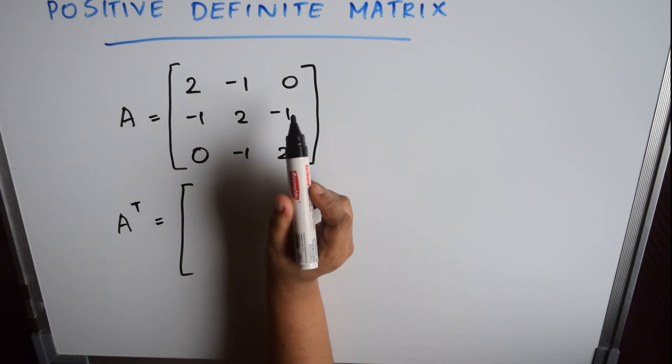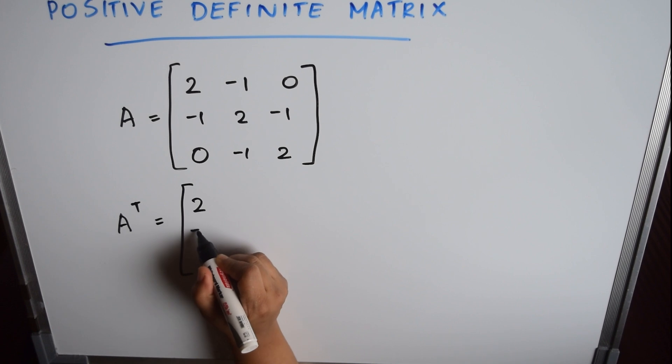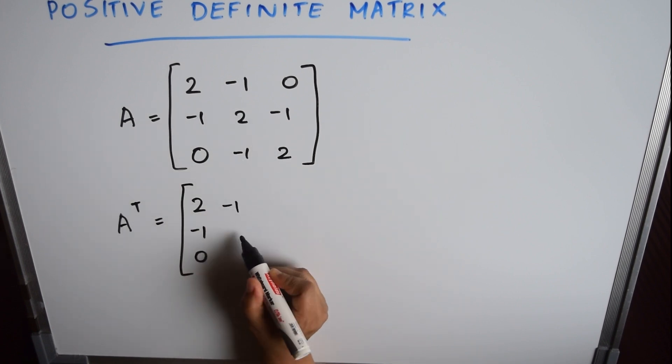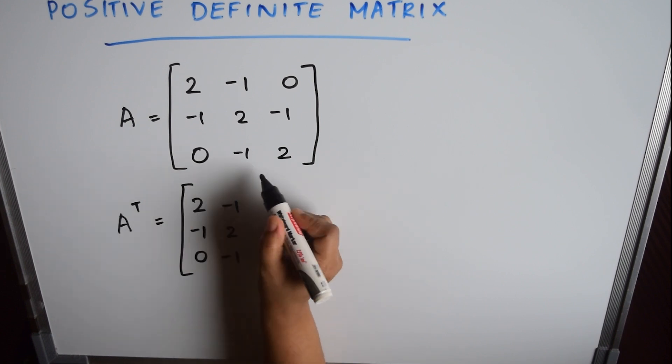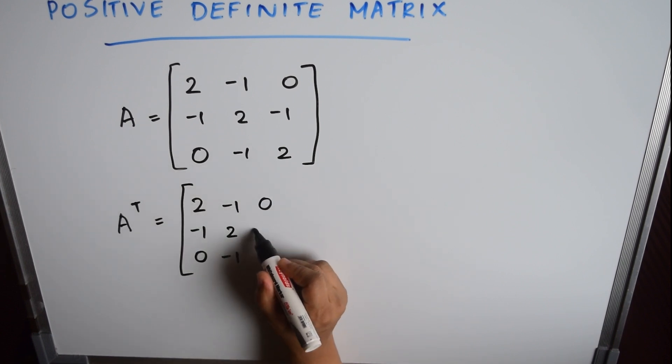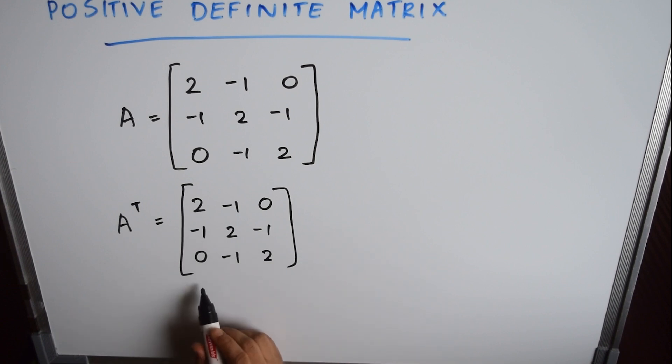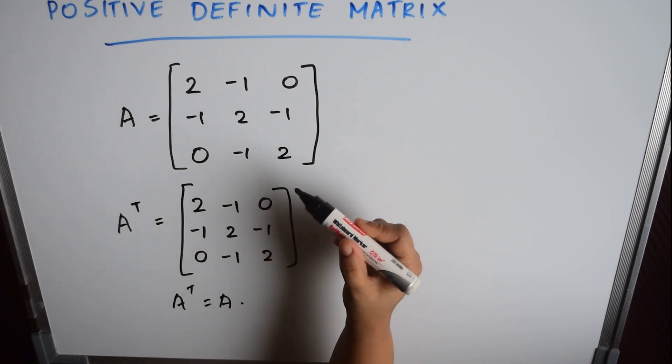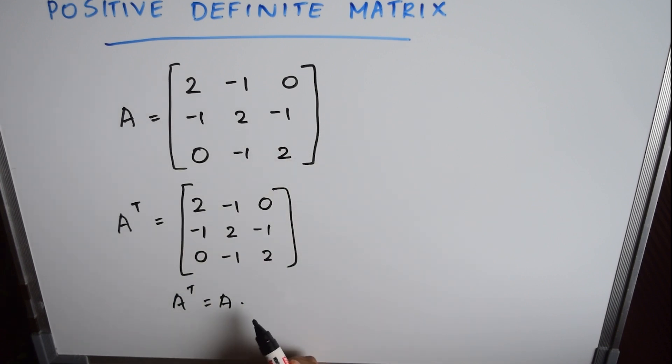So 2, -1, 0 will become the first column of this matrix. The second row will become the second column: -1, 2, -1, and the third row will become the third column: 0, -1, and 2. So here you can see that A transpose is equal to matrix A. This matrix is the same as this matrix, so A is a symmetric matrix.